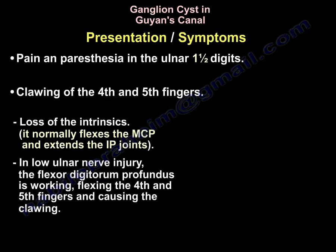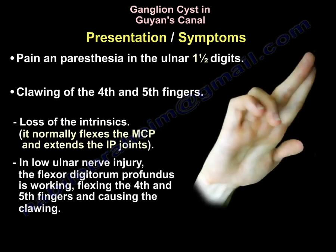The patient may present with pain and paresthesia in the ulnar one and a half digits and clawing of the fourth and fifth fingers with loss of intrinsics. The intrinsics normally flex the MCP joint and extend the IP joints. In a low ulnar nerve injury, the flexor digitorum profundus is working, flexing the fourth and fifth fingers, while the intrinsics are not working, causing clawing of the fourth and fifth fingers.